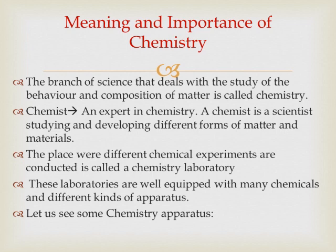These laboratories are well equipped with many chemicals and different kinds of apparatus. Apparatus means the glassware, stands, Bunsen burner, and all these things. Just as your mother needs utensils for cooking along with vegetables and spices, similarly when we do chemical experiments we also need certain utensils which are known as apparatus in chemistry terms.